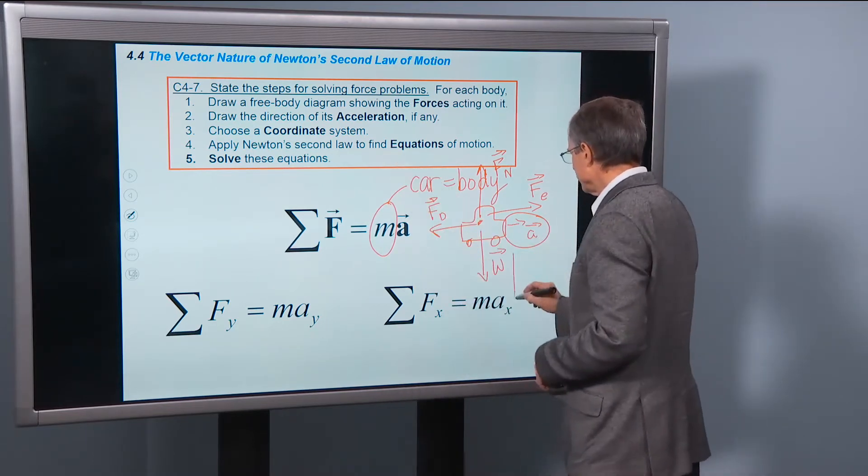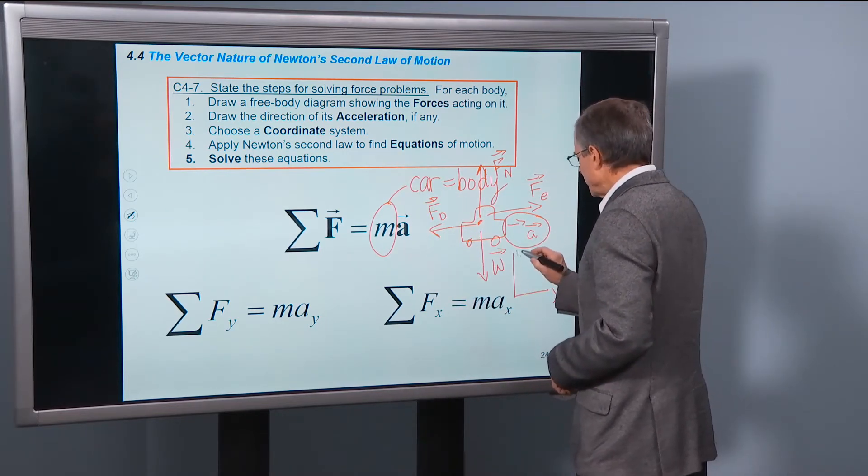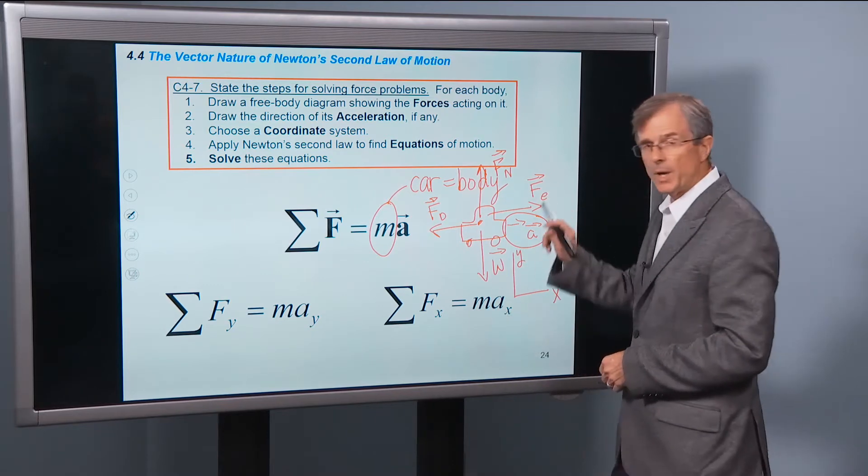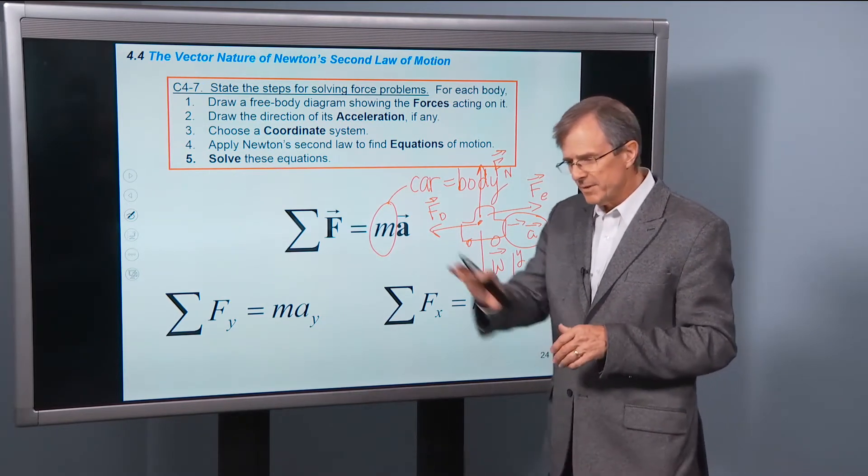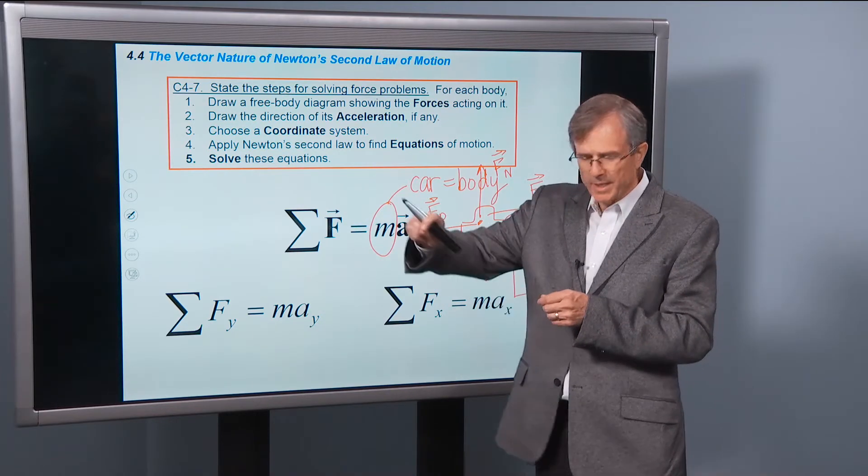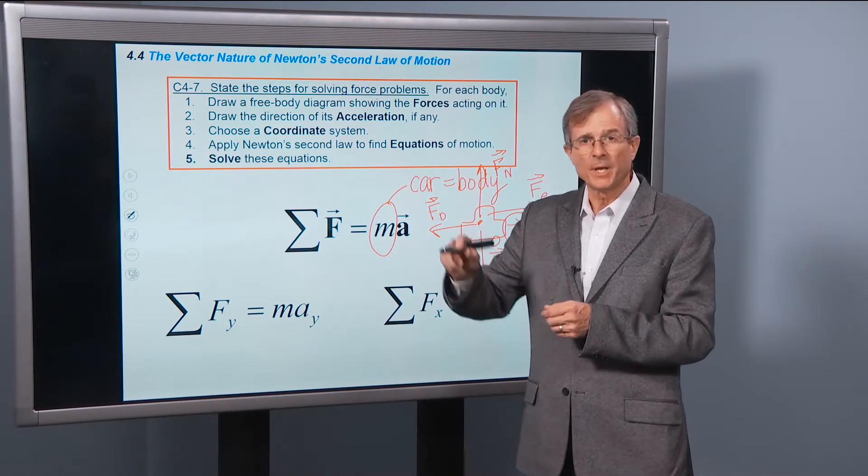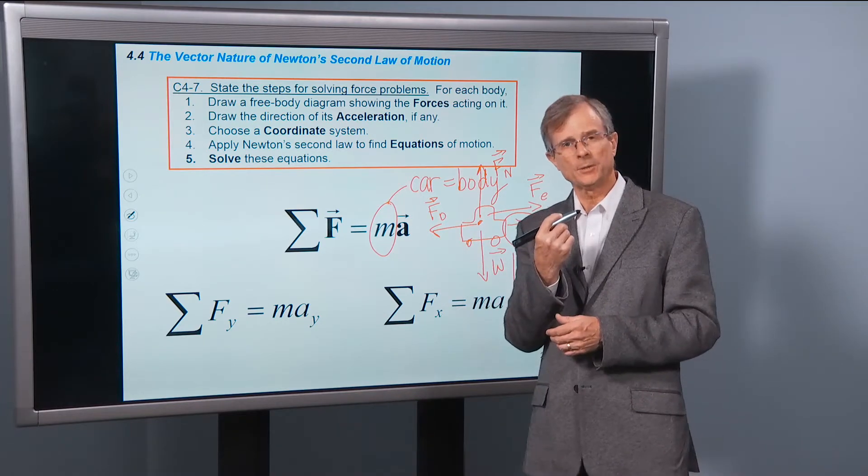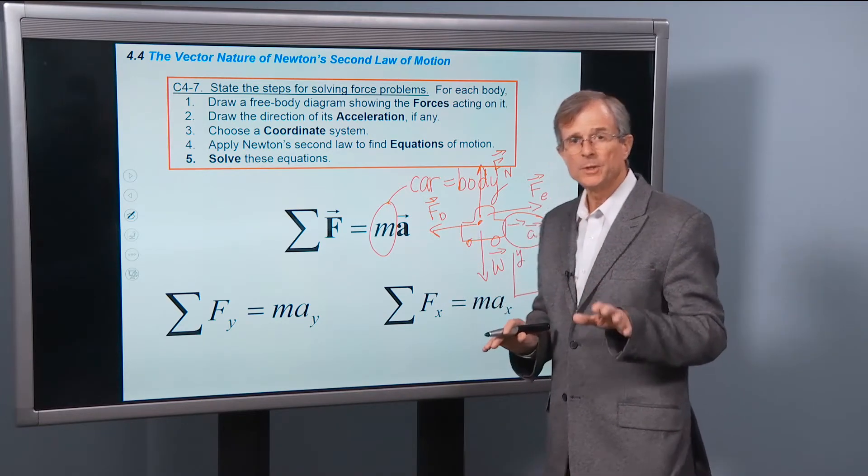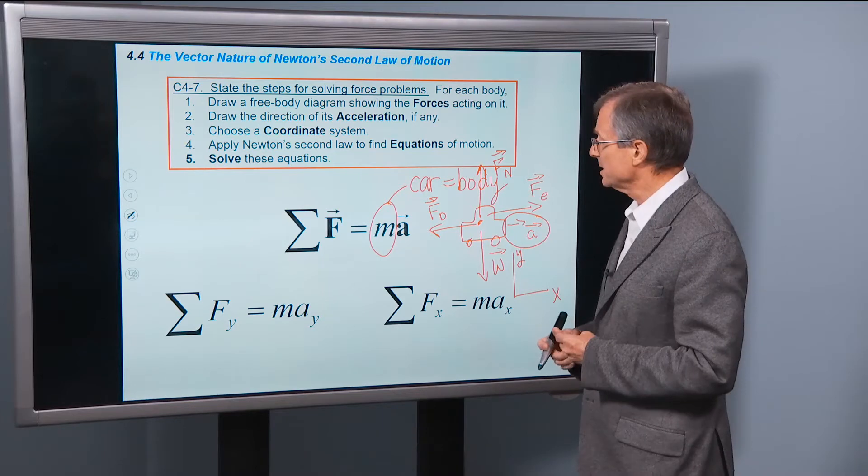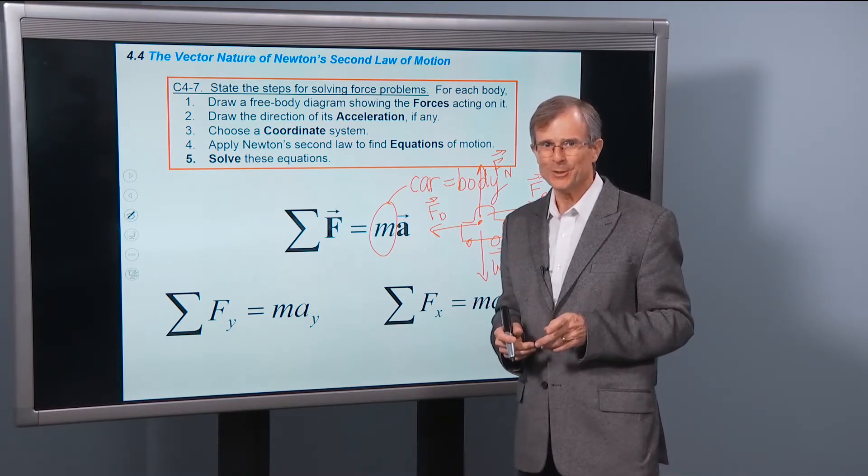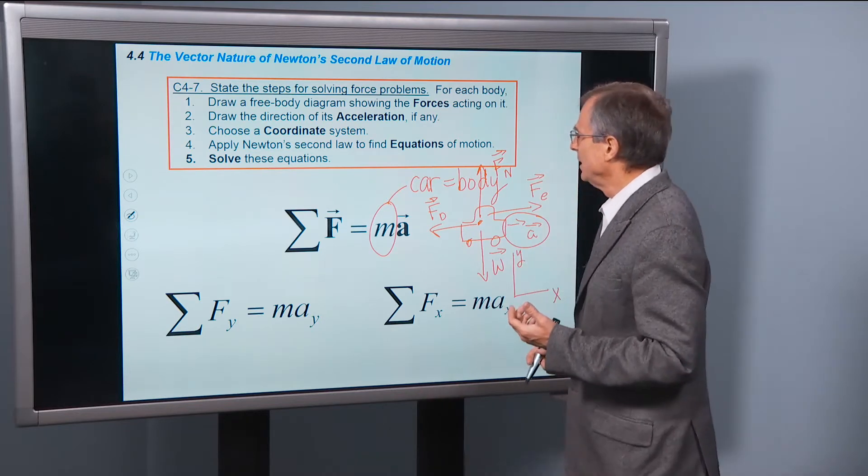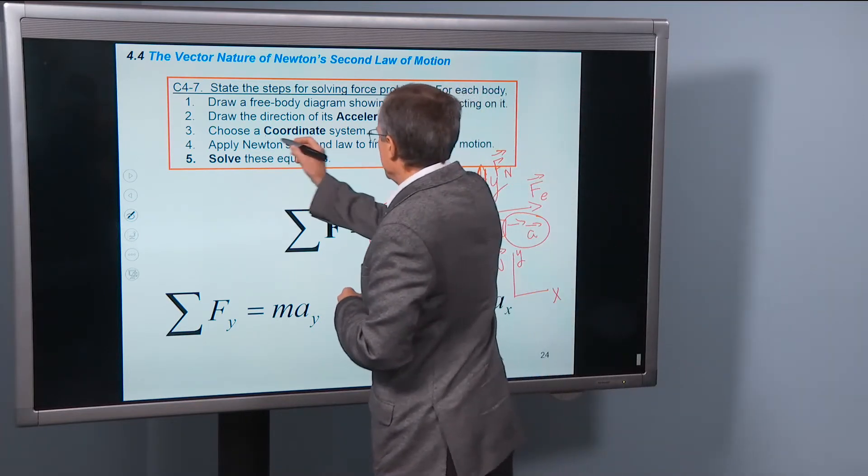Choose a coordinate system. Normally we'll take x to the right and y up. But in many cases, in this chapter especially, when we have inclined planes, it makes more sense to choose x along the plane, either up or down the plane, and y perpendicular to the plane. It's a free country about your choice of a coordinate system. But a good choice of a coordinate system can save you effort in algebra. And in doing, in this step, in choosing a coordinate system, it's usually, I can't think of an exception,